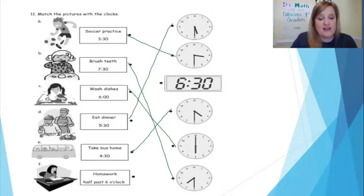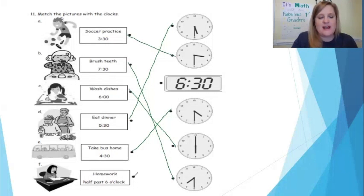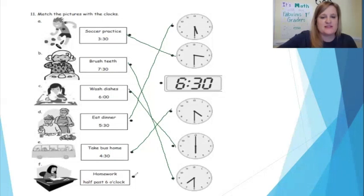Now let's check my last one. I do homework at half past 6 o'clock. Now, it doesn't say 6 o'clock — it says half past. So I know that means the minute hand has gone halfway around the clock, which means 30 minutes have passed. It's pointing to the 6. So 6:30 is half past six o'clock. Great job.